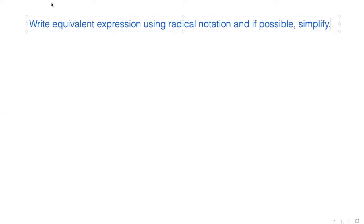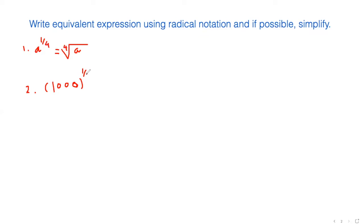Our first expression is a to the power 1 over 4. As the bottom number is 4, that is our radical index, so 4 goes as the index and a is inside. The next one is to the power 1 third, so the index is 3, and we can write this as the cubic root of 1000. We need a number multiplied by itself three times to get 1000 — that's 10, since 10 times 10 times 10 is 1000. So the answer is 10.